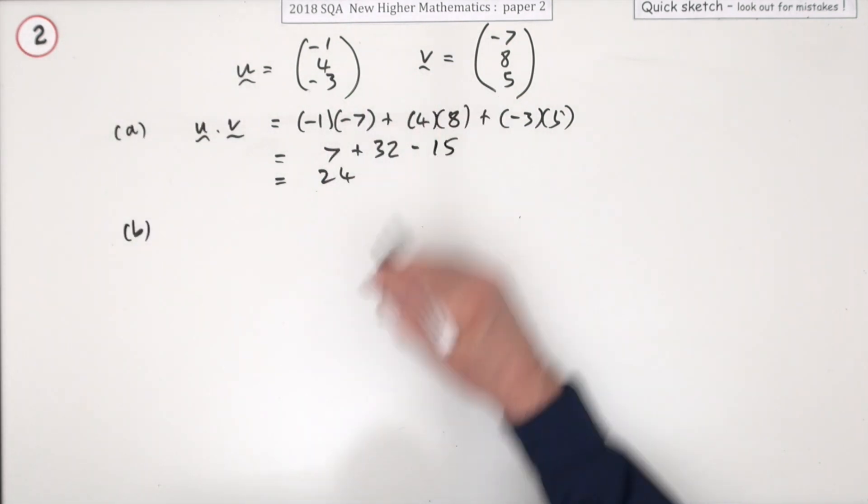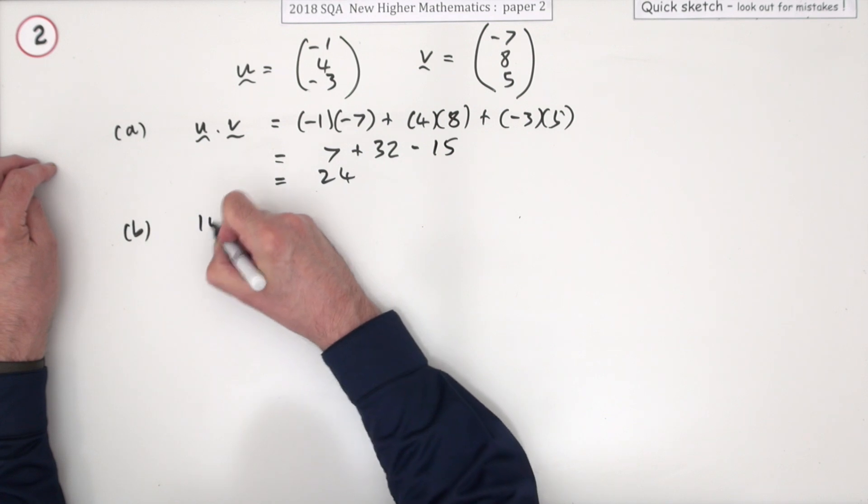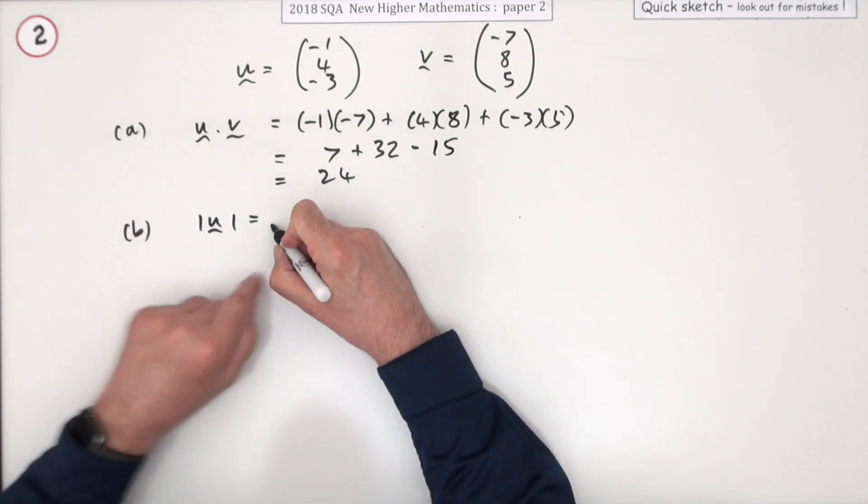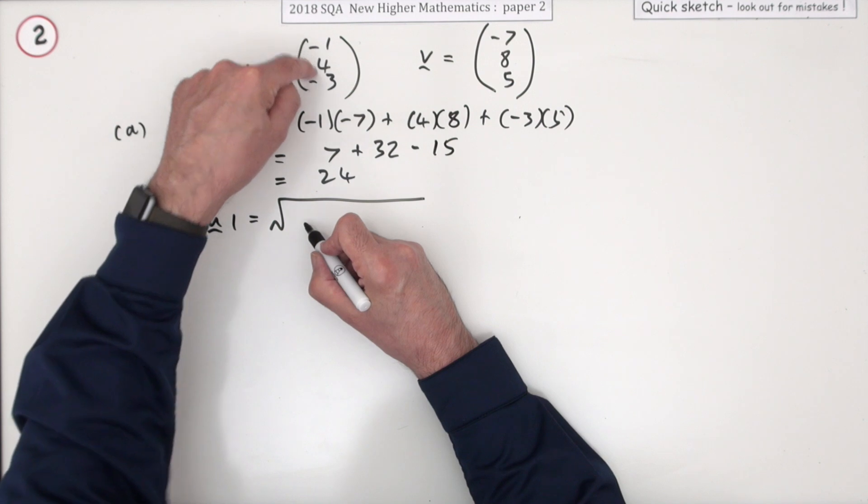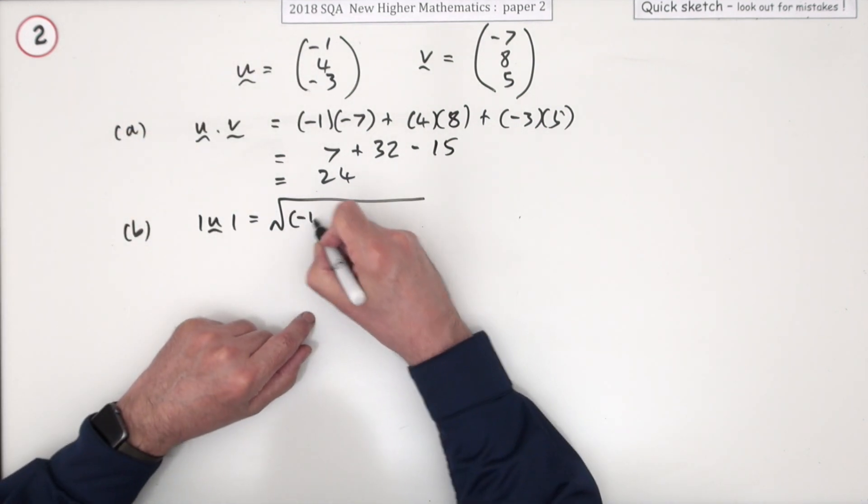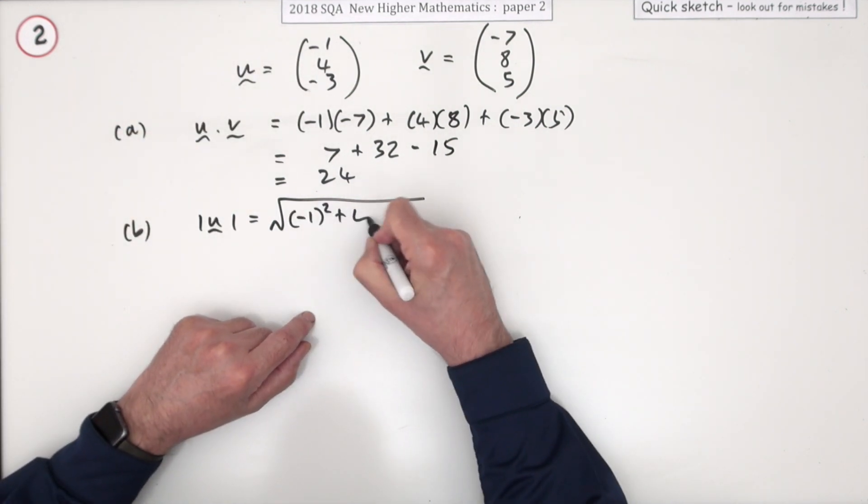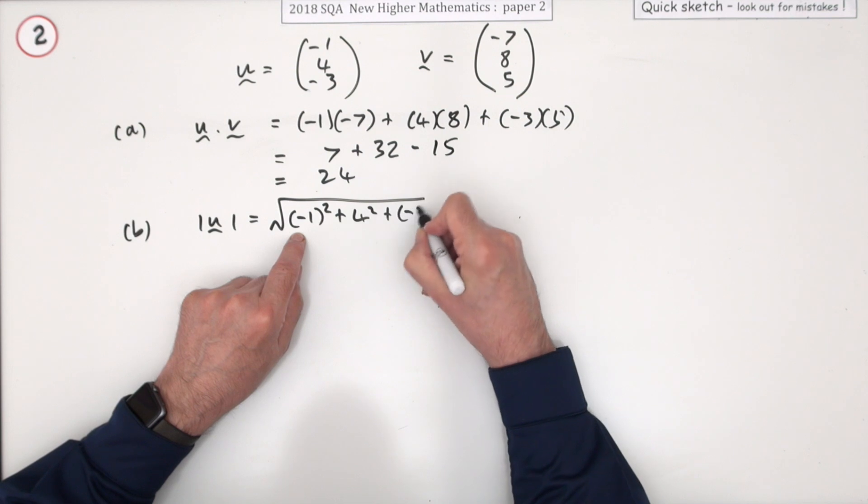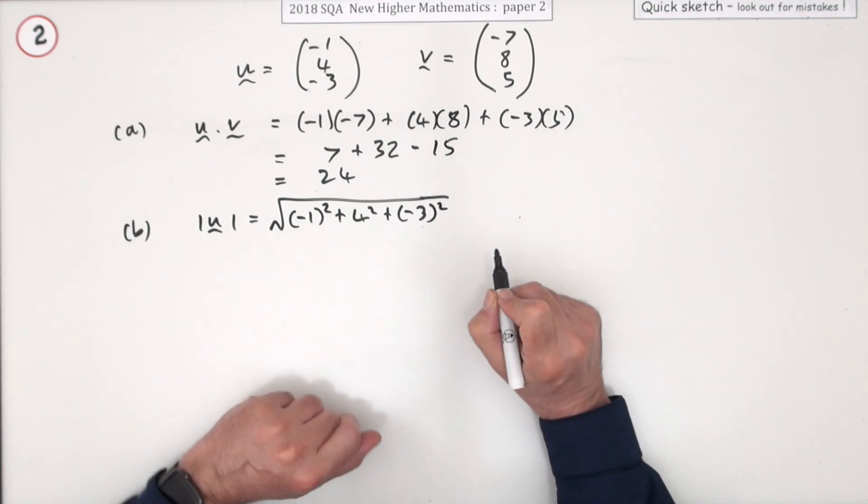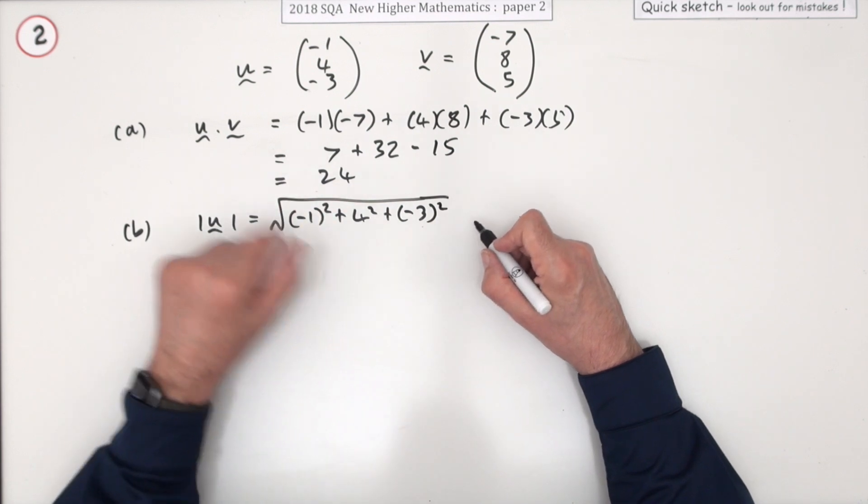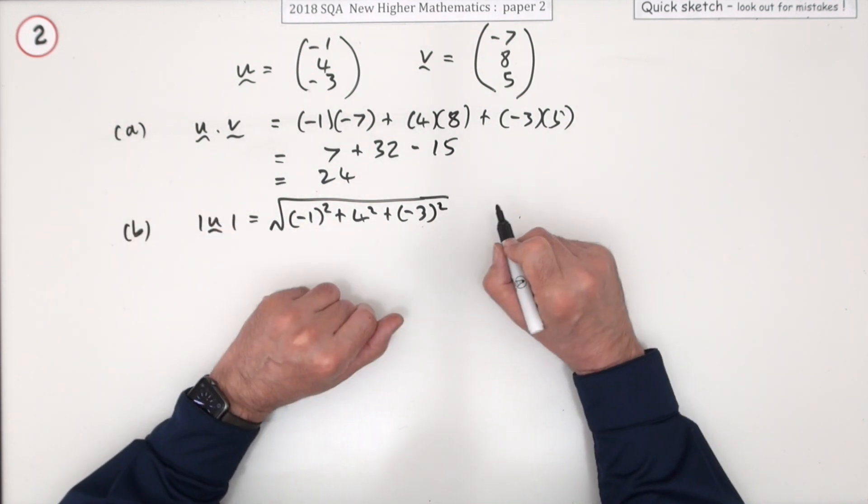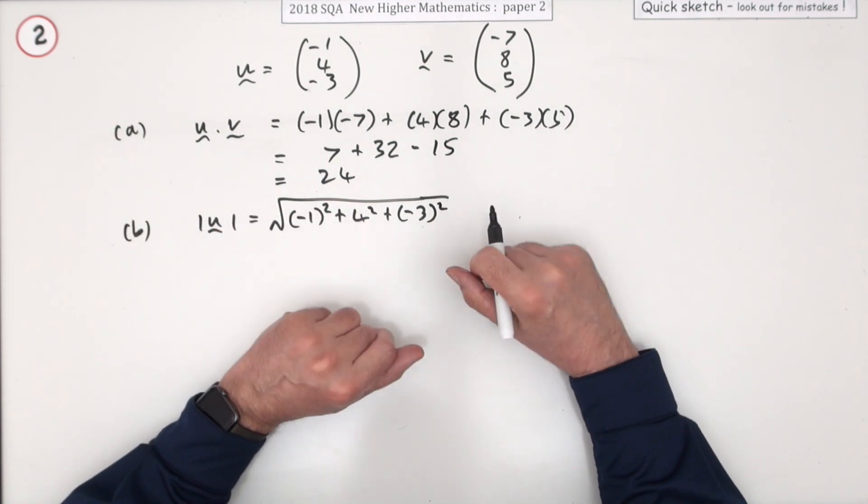Part (b): Calculate the acute angle between u and v. Well, that means you'll need the magnitude of u. So that'll be the square root of... now you could just square one, 16, or nine, but I think I'll just set it all out. Negative one squared - being even more rigorous there, they like that kind of thing. It's negative one even though the answer is the same as one.